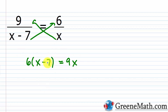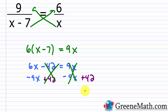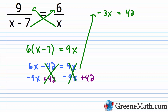Cleaning up the left side: 6 times x is 6x, minus 6 times 7 is 42, equals 9x. Subtracting 9x from each side and adding 42 to both sides: 6x - 9x is -3x, and this equals 42. Dividing both sides by -3 gives x = 42/(-3), which is -14.